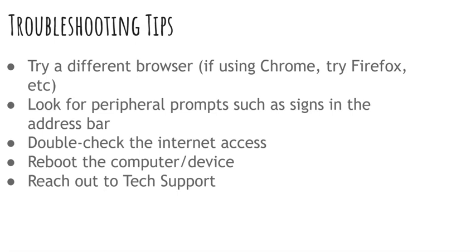Also, look for peripheral prompts — sometimes if you're trying to do something on a web page, there might be a prompt or warning indicator in the address bar, such as an exclamation point or a red circle with a question mark. Keep an eye out for those and click on them to figure out what's going on. It's always useful to double-check your internet access and make sure it's running okay. If things seem glitchy, try closing the browser and restarting it, or actually rebooting the computer from the beginning. Sometimes you need to clean the slate and go back in — that works quite often.